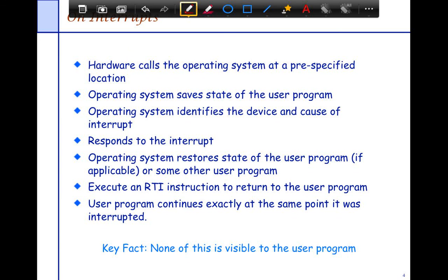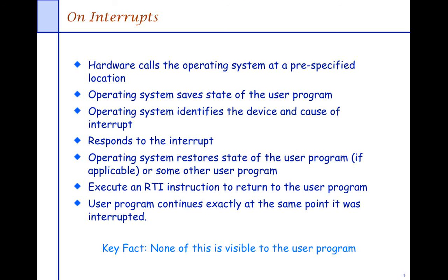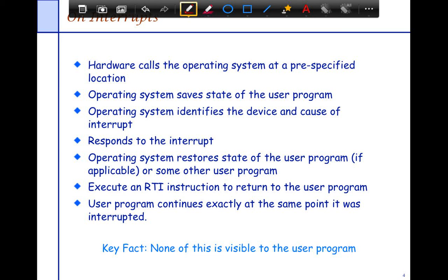Next we look at what happens on interrupts — a critical aspect of OS interaction. Unlike programs, these are event-based. The way interrupts work: the hardware calls the operating system at a specified location. For example, you hit a keystroke on your keyboard, the keyboard sends an interrupt through the physical wires to the CPU, which then calls the operating system. To disambiguate between multiple simultaneous interrupts from different devices quickly, using a giant software switch-case would be too slow.